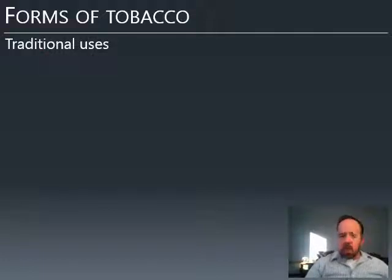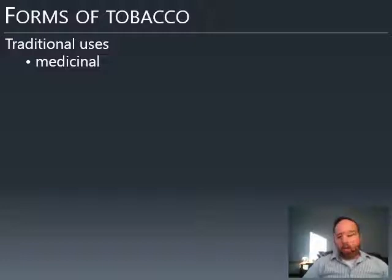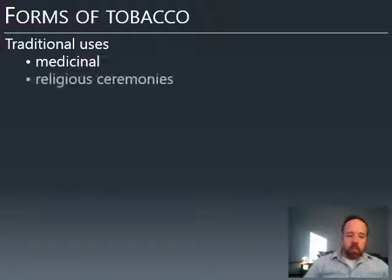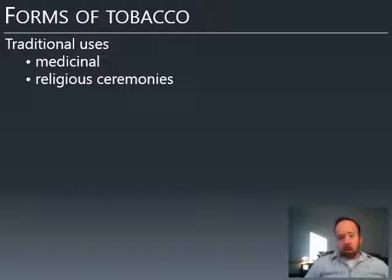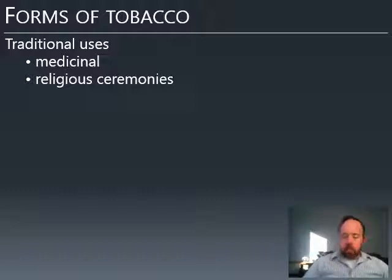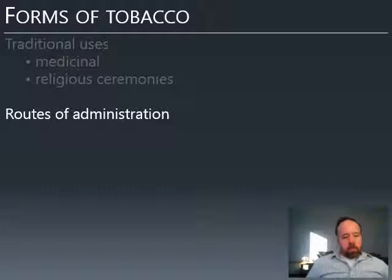There are also a variety of uses. Native Americans traditionally, and Europeans eventually, would use tobacco medicinally. In sufficient doses, it's an analgesic — a painkiller — so it can be used for aches and pains. It was also thought to cure a variety of things like colds and other ailments. It was also used in religious ceremonies. In sufficient quantities, nicotine can be hallucinogenic. Hallucinogens are often involved in traditional religious ceremonies, and their effects are often interpreted as spiritual experiences.